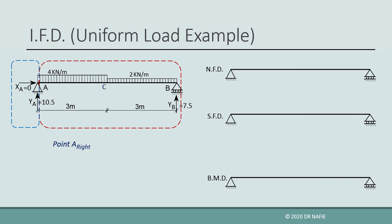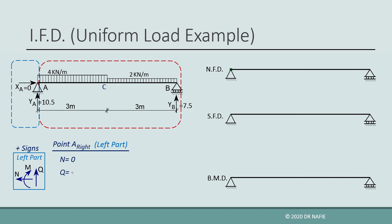For the current point, we will work on the left part, so we will display the sign convention of the left part for reference. Because the beam is not subjected to any horizontal force, the normal force will be zero for the whole beam. The shear force is the sum of all the vertical forces in the left part. We only have YA in the left part, which is equal to 10.5 kN, so the shear force will be positive 10.5 kN. We draw this value to scale on the shear force diagram.